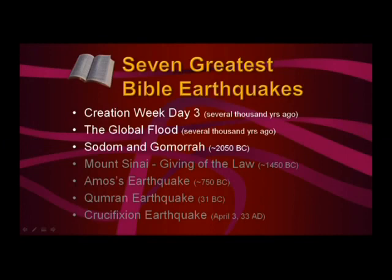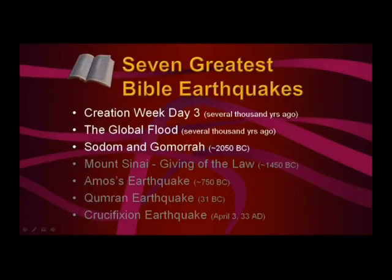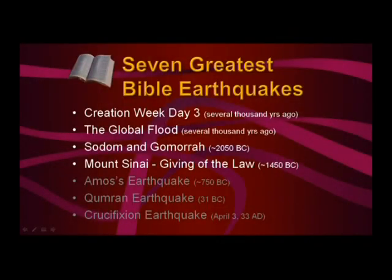Sodom and Gomorrah is described as an earth-shaking event — God rained fire and brimstone on Sodom and Gomorrah, about 2050 B.C. The giving of the law on Mount Sinai is also associated with a great earthquake. It was a terrible experience for the children of Israel, but the giving of the law was associated with that earthquake and fire event — that is when Moses received God's law.